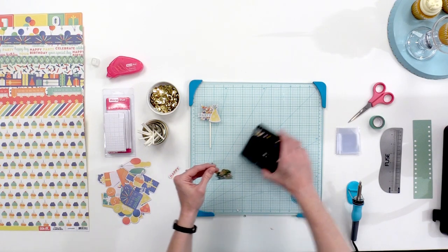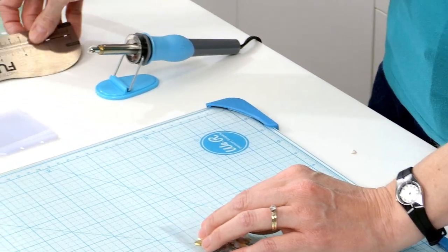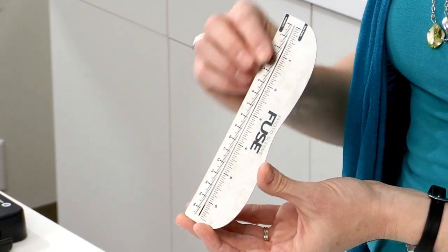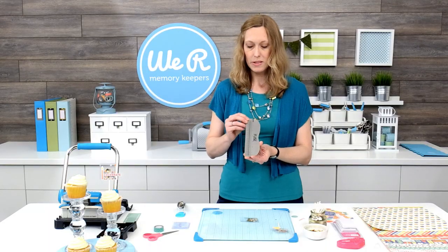Okay, so once you've filled that up, we're going to seal that shut with the fuse tool. And this fuse tool is awesome because it comes with this handy metal ruler, and you never have to worry about melting or burning anything with this ruler.